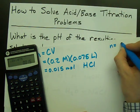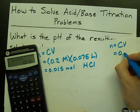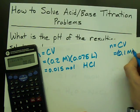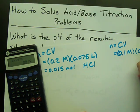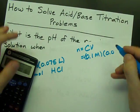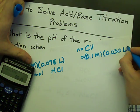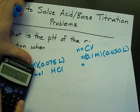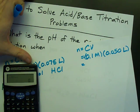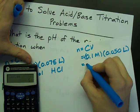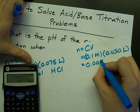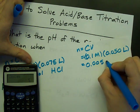Got to do the same for my NaOH. Concentration is 0.1 molar. My volume, 0.05 liters. When I multiply those, 0.1 times 0.05, I get 0.005 moles.